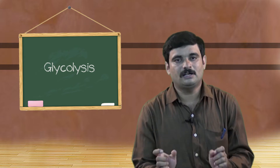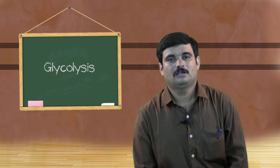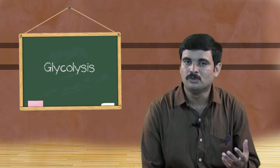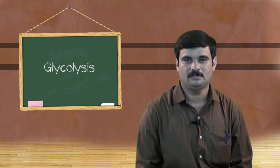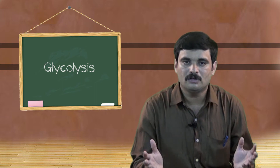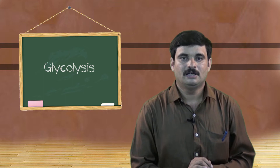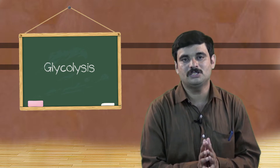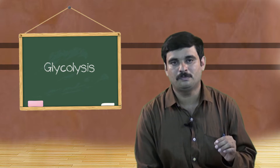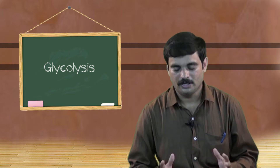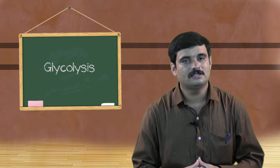If we look at the etymology of the term glycolysis, 'glyco' refers to glucose, that is sugar, and 'lysis' refers to breaking down. So glycolysis is the breaking down of sugar into pyruvic acid. This process takes place in the cytoplasm of the cell.